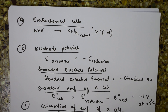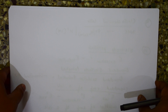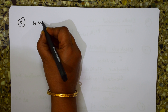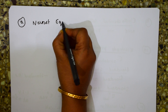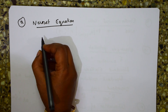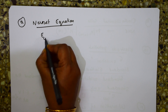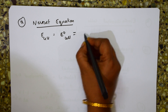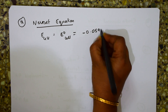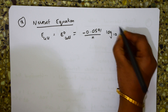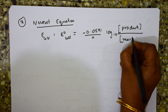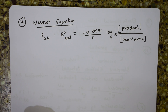The Nernst equation (formula 12) is: E_cell = E°_cell − (0.0591/n) × log₁₀([products]/[reactants]). This formula will be used in the numericals. The 0.0591 factor comes from multiplying 2.303RT/F at standard temperature.